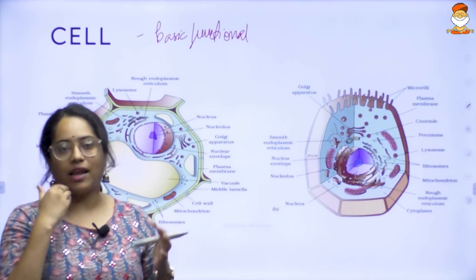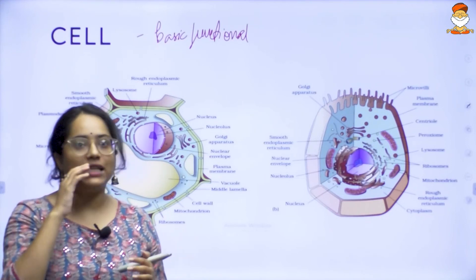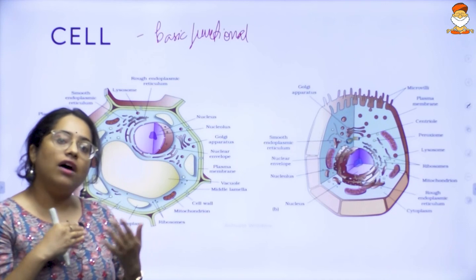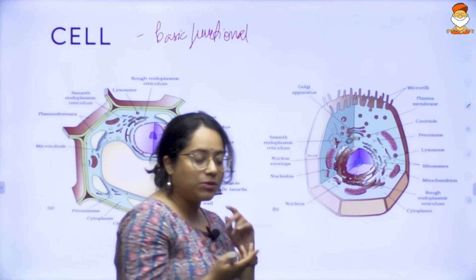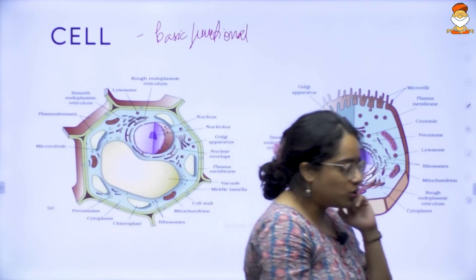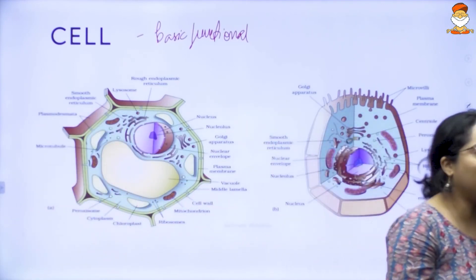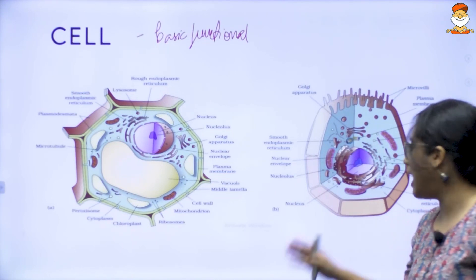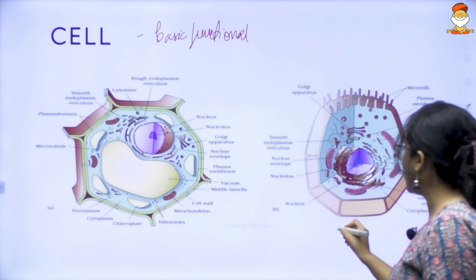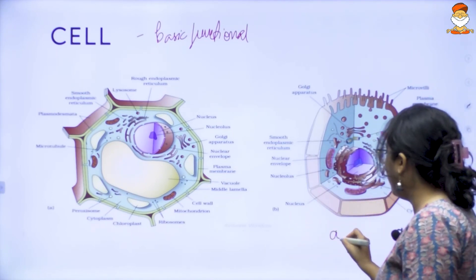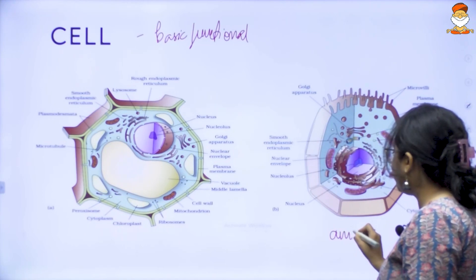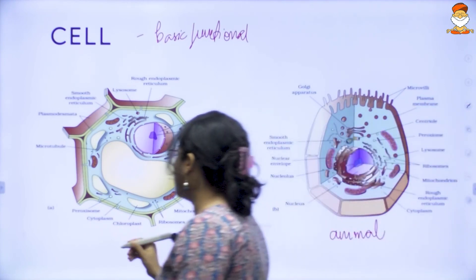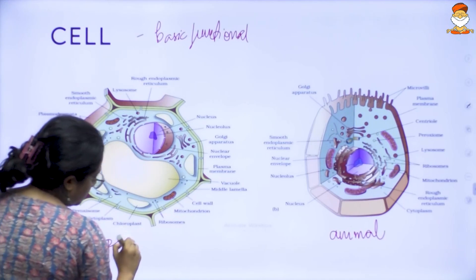This is the reason why we call cell as the basic functional unit — it can be anything, animal, plant, etc. Because this is something UPSC has asked previously also, let's look at where exactly the differences are when you compare animal cell and plant cell. This one is an animal cell and this one is a plant cell.